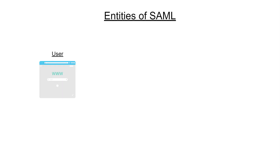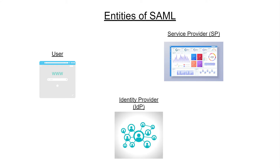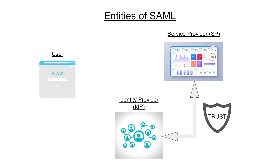The SAML protocol has three entities: the user agent, which is typically the user's web browser; the service provider, or SP, which is the application you try to access; and lastly, the identity provider, or IDP. When configuring SAML federation, you establish a trust relationship between the service provider and the identity provider.